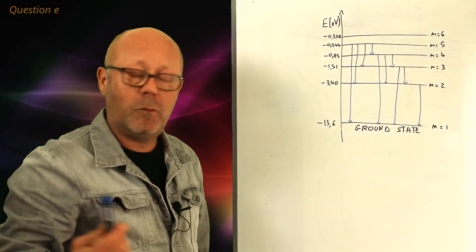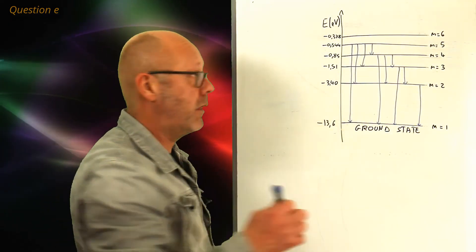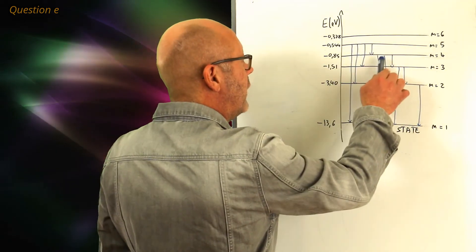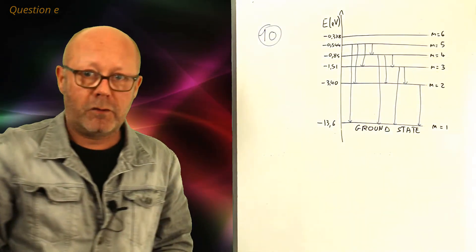So, how many transitions are possible when you have the atom at level 5 to start with? 1, 2, 3, 4, 5, 6, 7, 8, 9, 10. 10 transitions are possible.